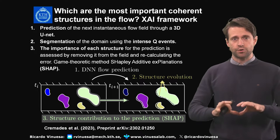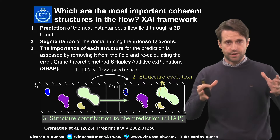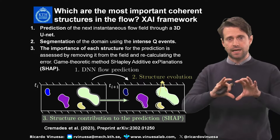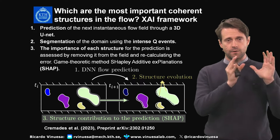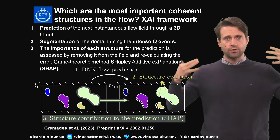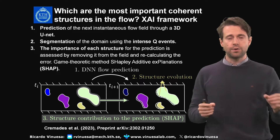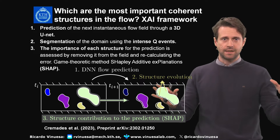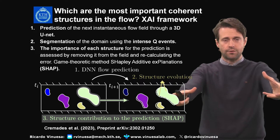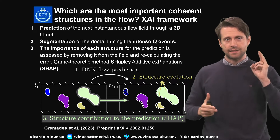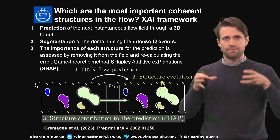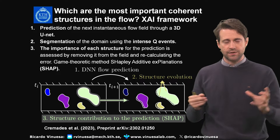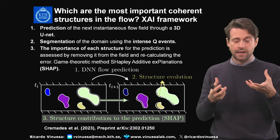If you remember — and we will also post the previous video in the description so you can see all the context — we are using the SHAP method. In the first step, we have the current state of the flow: three-dimensional fields of U, V, and W fluctuations, and we're going to predict a future state of the flow through a 3D U-net, basically a deep neural network based on convolutions that can exploit the spatial patterns in the data. Once we have the future prediction of the flow, for characteristic times of the near-wall region, in the second step we identify features in the input.